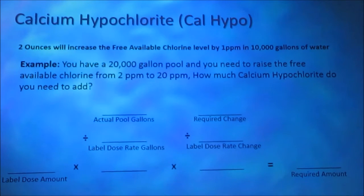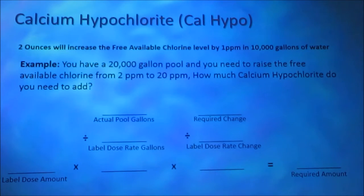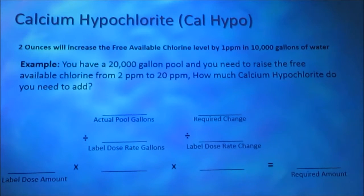You have a 20,000 gallon pool and you need to raise the free available chlorine from 2 parts per million to 20 parts per million. How much calcium hypochlorite do you need to add?